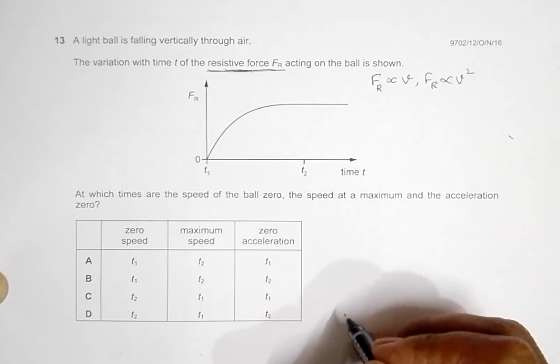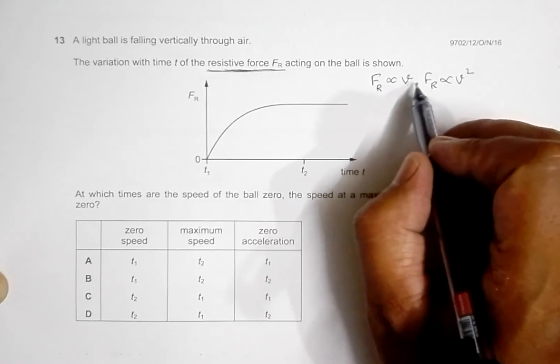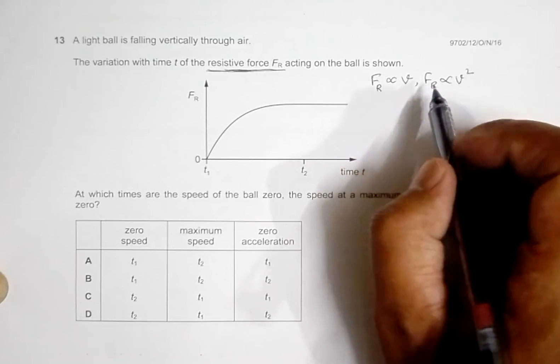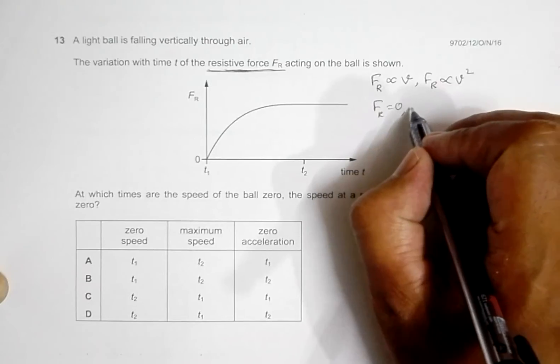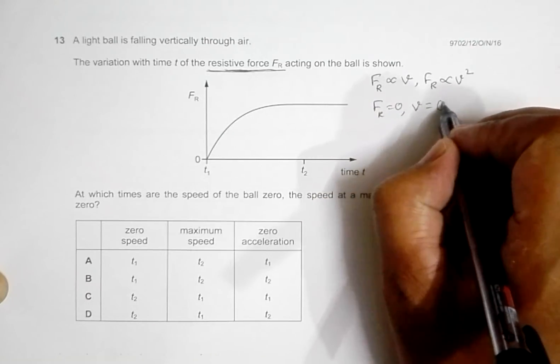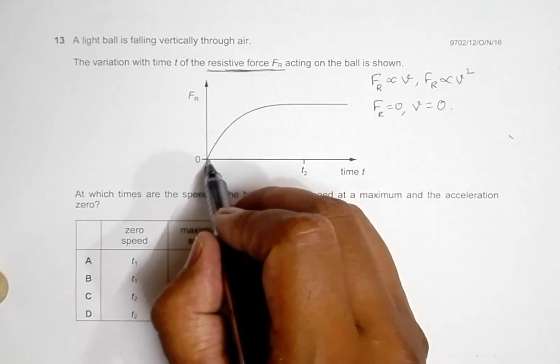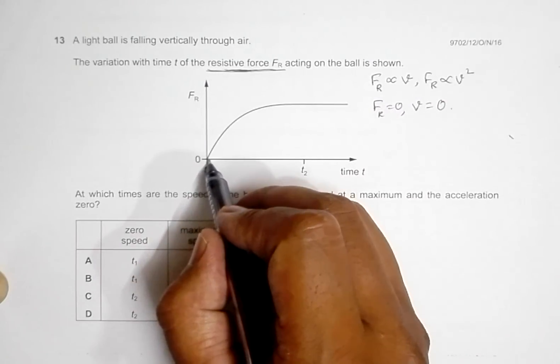So in any way, if we say FR equals zero, at that time the velocity should be zero because of the proportionality. So here initially FR equals zero, so at that time the speed or velocity should be zero.